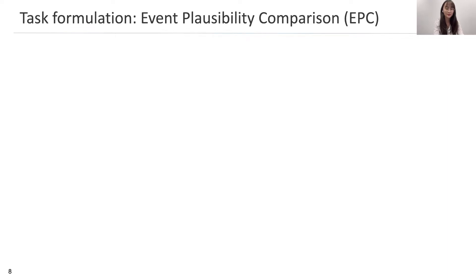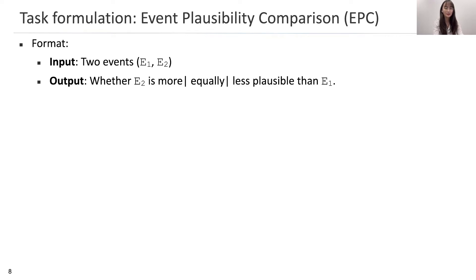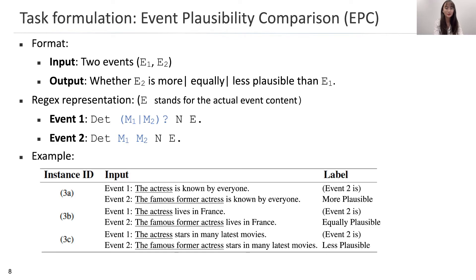Finally, the third task, EPC. The input is two events, E1 and E2, and the output is whether E2 is more, equally, or less plausible than E1. In the regex notation, the two events only differ within the NP but have the same event content E. E1 contains one or none of the modifiers plus the noun, and E2 contains the entire NP. For example, compared with 'the actress,' 'the famous former actress' is more likely to be known by everyone, equally likely to live in France, and less likely to star in many latest movies. Intuitively, this task tests the influence of adding modifiers on different attributes of the noun.